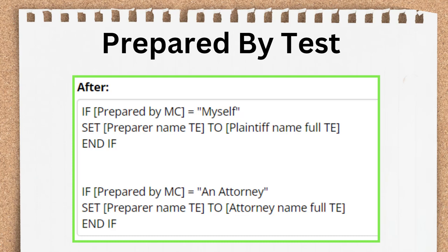This final example came out of helping an author whose form required the name of the preparer to be included. The idea was that the A2J guided interview could be filled out by an end user alone or with the assistance of an attorney. In the interview, the author asks the end user who they are — the plaintiff or the defendant — then asks for their name, then combines it with the has answered logic into the variable plaintiff name full TE or defendant name full TE. The author also asks for the attorney's name if assisted by an attorney and combines it into a full name variable. Based on the question 'who helped you prepare this form,' the user can pick from a list with options of 'myself' and 'an attorney.' The author then sets the variable preparer name TE to either the end user's full name or the attorney's full name. In the subsequent template, the author can use the name of the litigant and the attorney and mark who prepared the forms as required by the court. This example builds on the has answered and multiple conditions in one logic block idea.